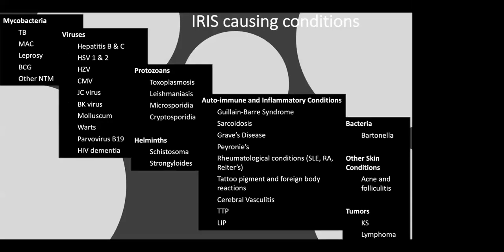This is a summary of conditions that can cause IRIS. We have bacteria, viruses, protozoans, helminths, autoimmune and inflammatory conditions, and tumors. I will be highlighting some of these such as TB, MAC, CMV, toxoplasmosis, and Kaposi's sarcoma.